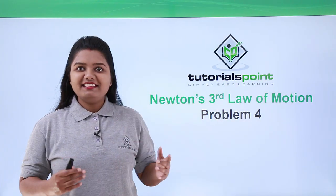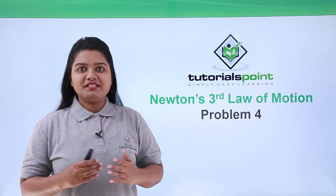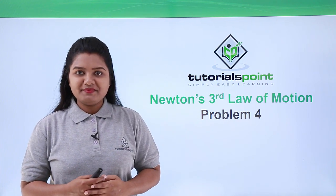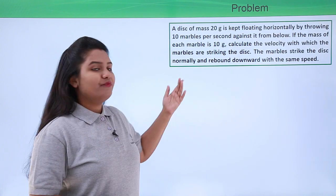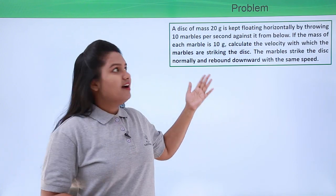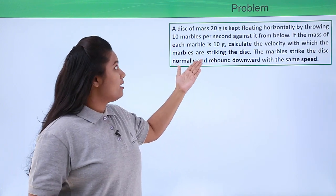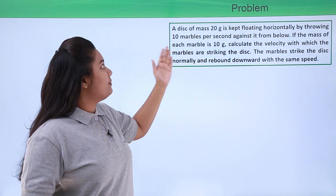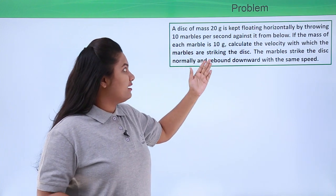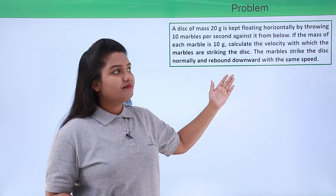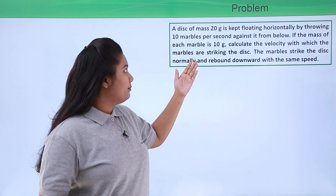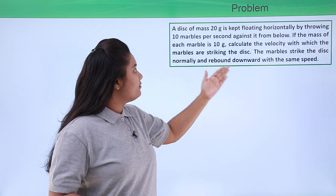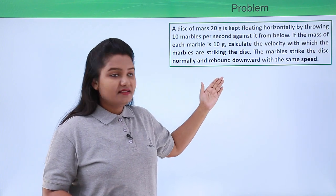Hello everyone. In this video we are going to solve another problem based on Newton's third law of motion. Here is a problem which reads: a disk of mass 20 grams is kept floating horizontally by throwing 10 marbles per second against it from below. If the mass of each marble is 10 grams, calculate the velocity with which the marbles are striking the disk.